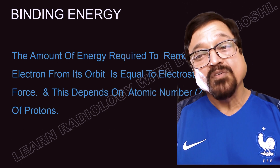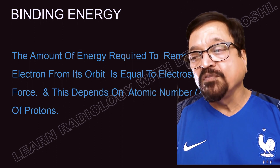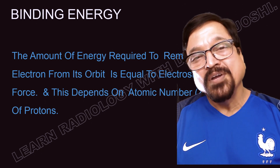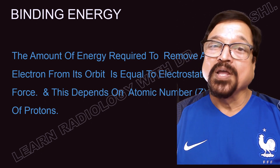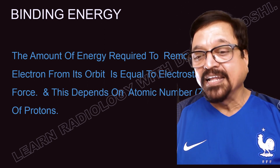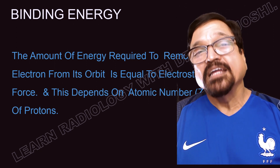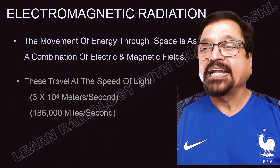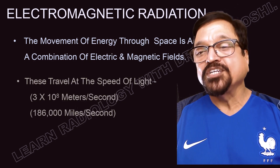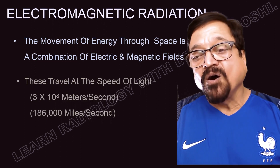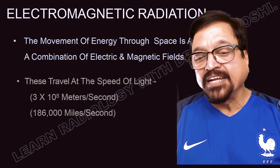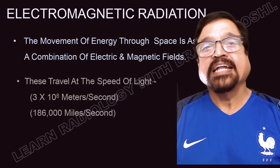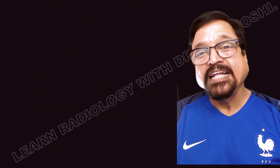What is binding energy? The amount of energy required to remove an electron from its orbit is equal to the electrostatic force binding that electron around the nucleus. You need energy greater than that to remove the electron. Energy levels differ at different orbits, and this depends on the atomic number of the element. Electromagnetic radiation is the movement of energy through space as a combination of electric and magnetic fields. All electromagnetic waves travel at the speed of light — 3×10⁸ meters per second, or 186,000 miles per second — whether they are radio waves or gamma waves.